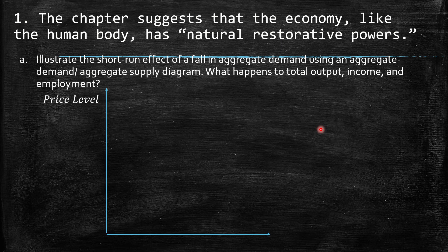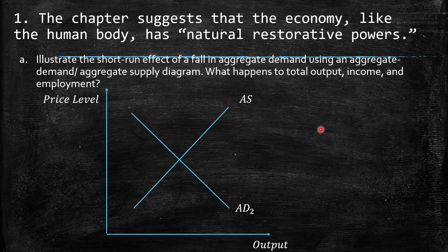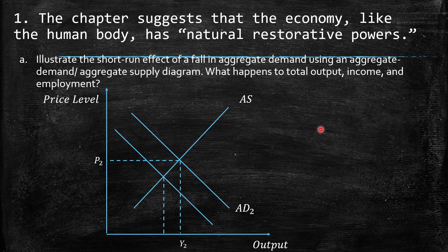Well, so we need to depict this with the price level y-axis, and then in the x-axis we need to put the output. This is how we represent the aggregate diagram. Then we have the aggregate demand, which is like a downward slope, and then we have this upward slope, which is the aggregate supply. And then here is the equilibrium. We are going to put the equilibrium P1 and Y1.